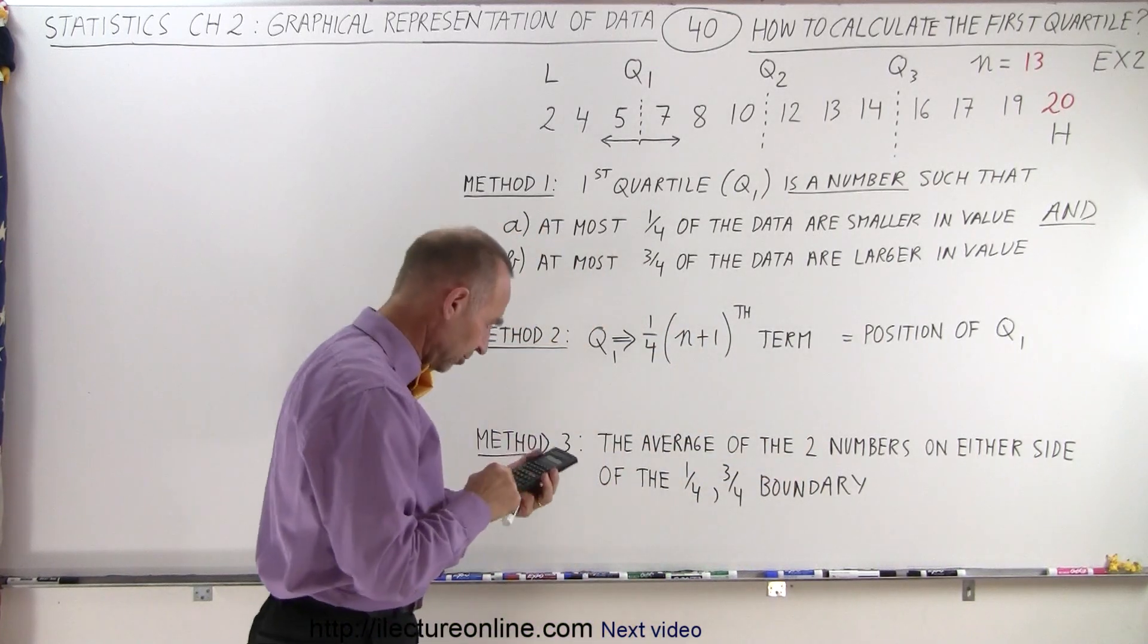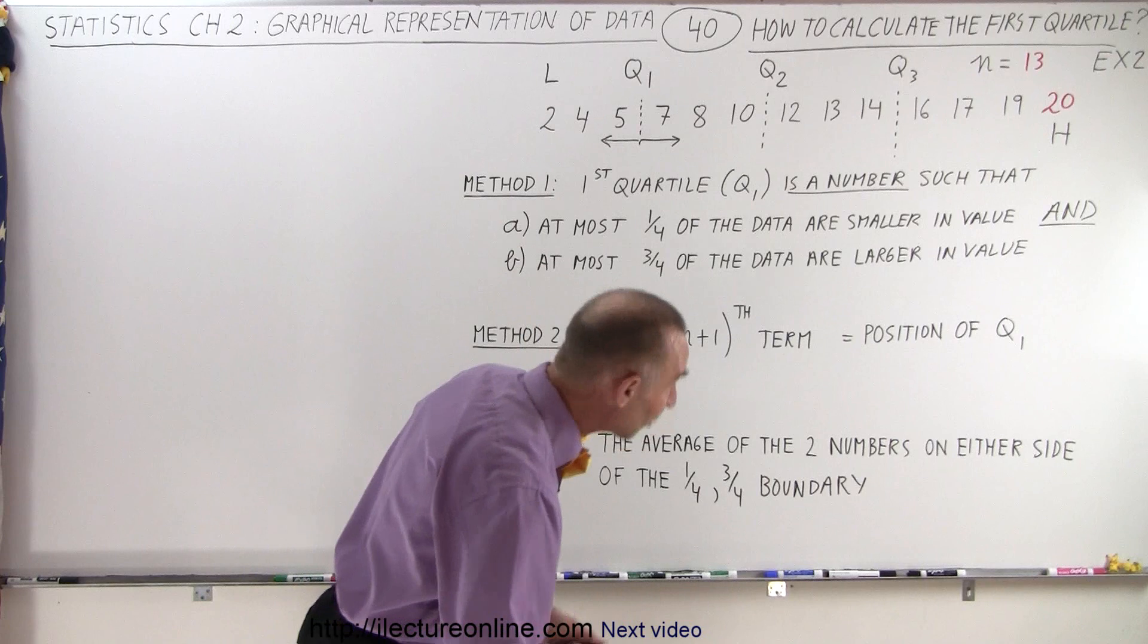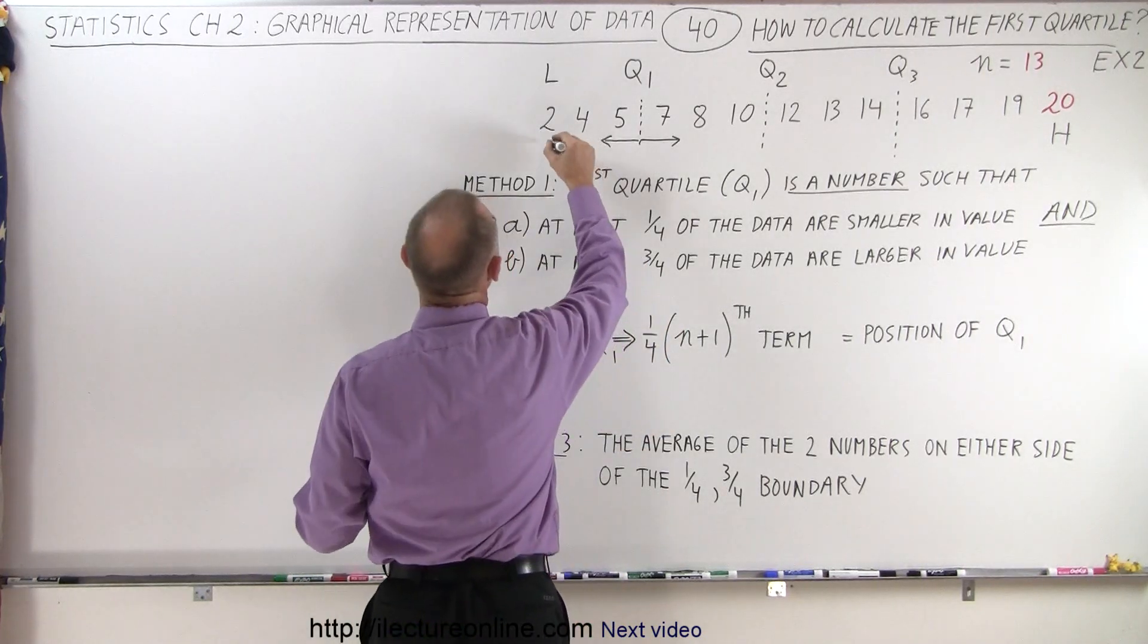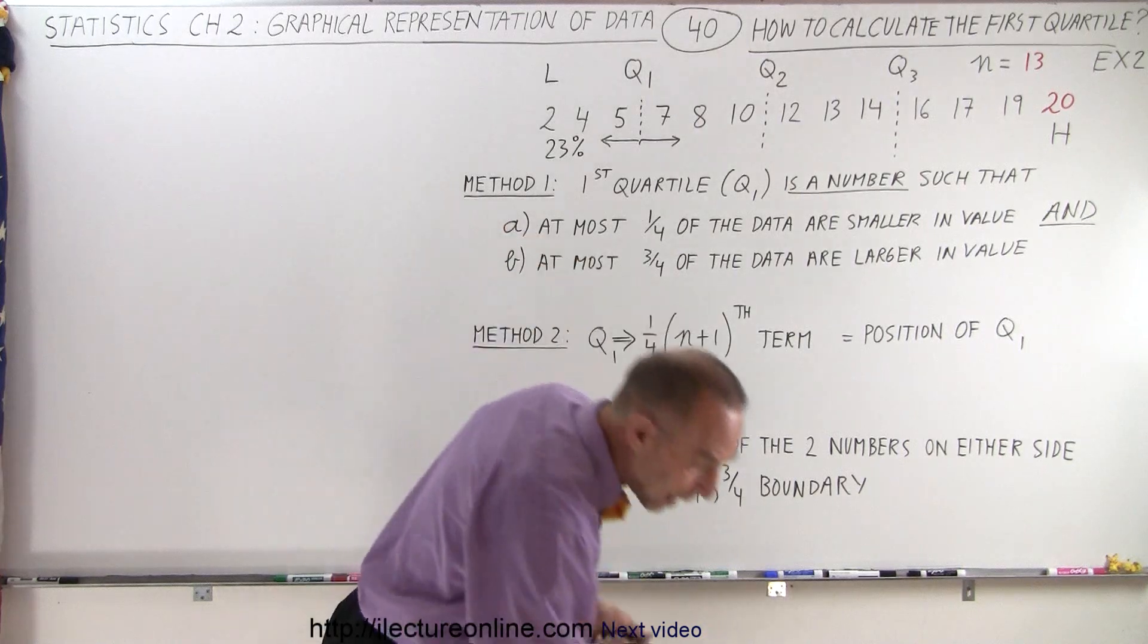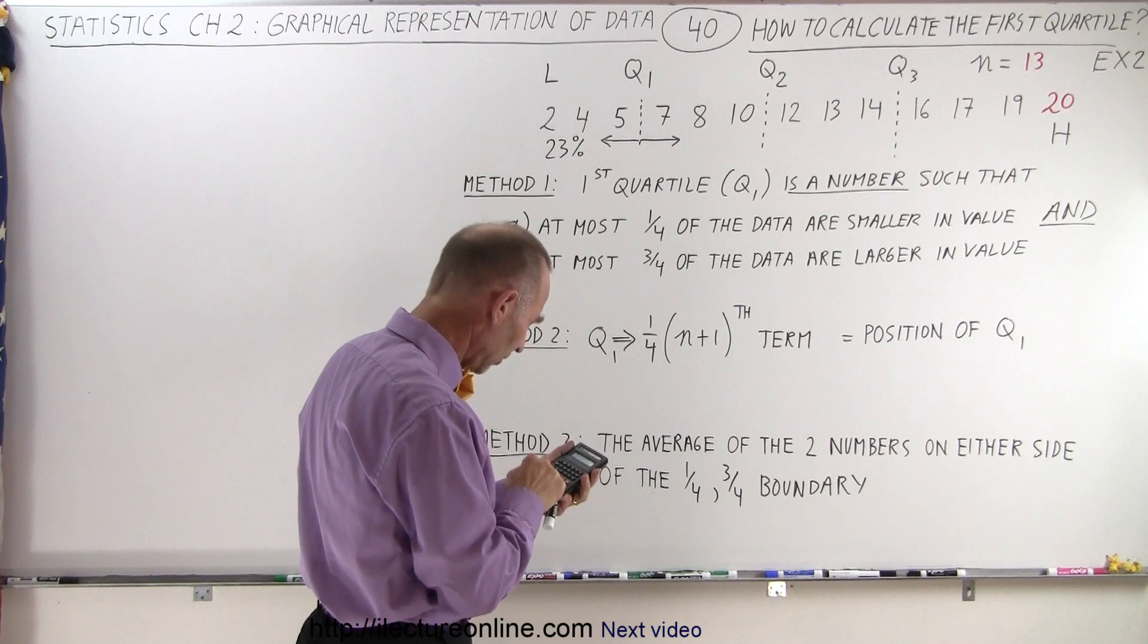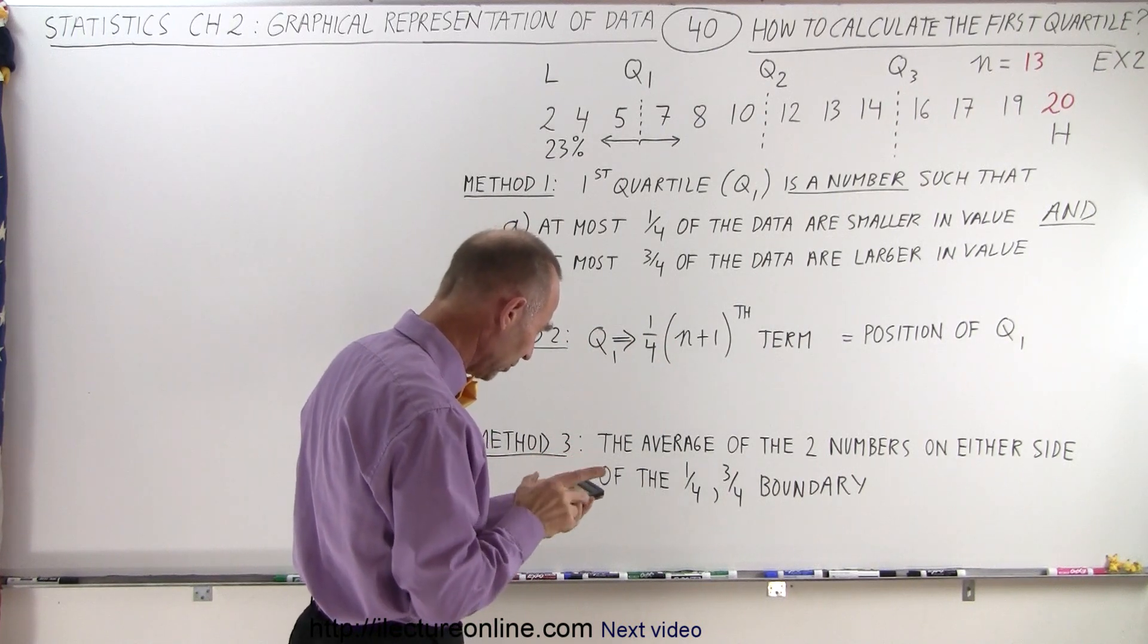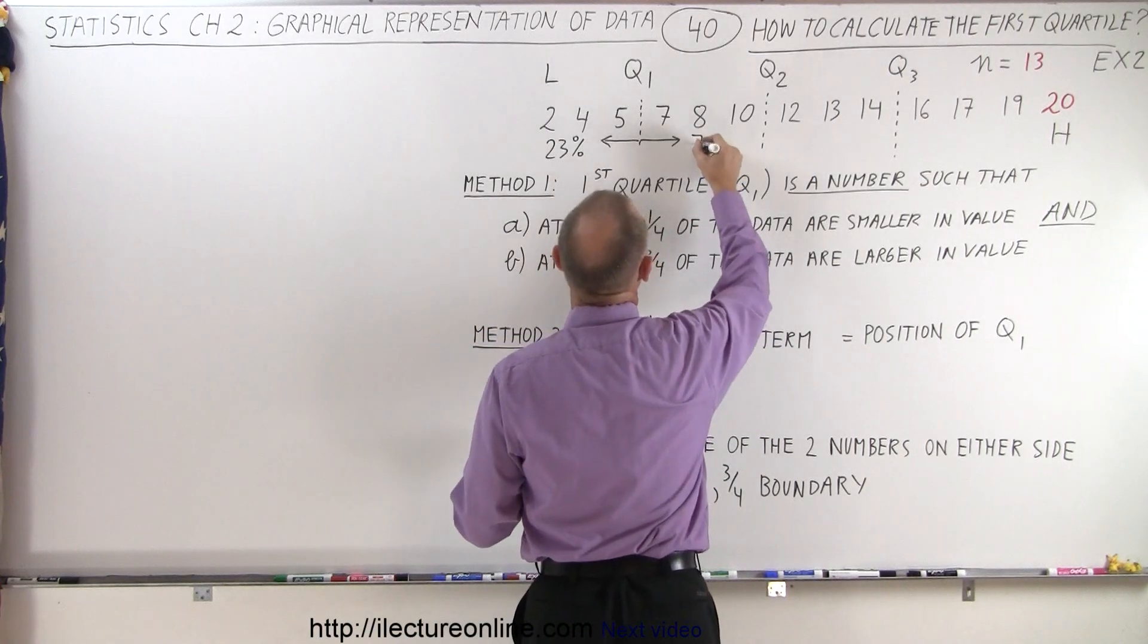So here we have 3 out of 13, 3 divided by 13, which means that 23% of the data points are to the left of that boundary. And to the right we now have 10 out of 13 data points, or 77% of all the data points fall to the right.